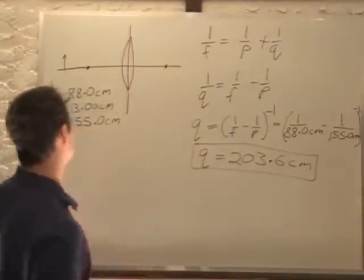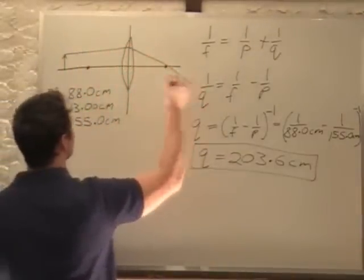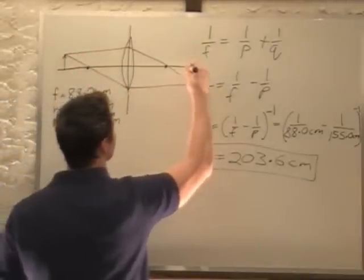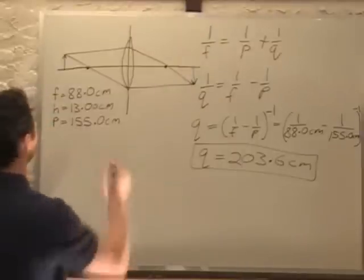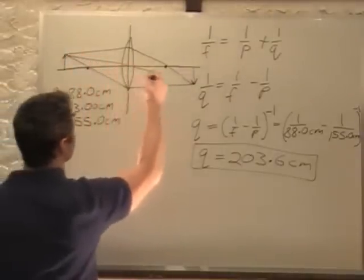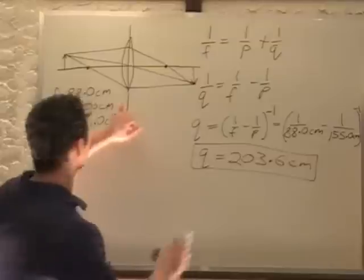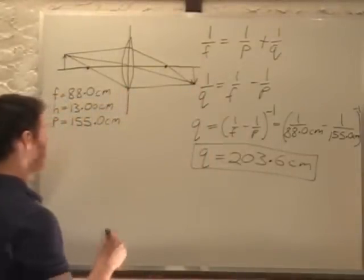So now if we actually draw our ray diagram out for this, we have an image there. Our third ray can actually go right through the center. So we say Q is 203.6 cm, and we want to find the height of our final image.